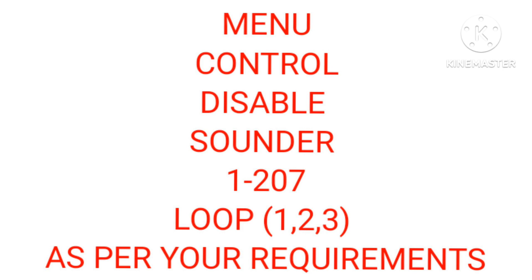By this method you can disable the sounders. If you want to enable them again, go to Menu, then Control, then Enable, then Sounders, then enter the parameters, and select the loop in which the sounders are located.